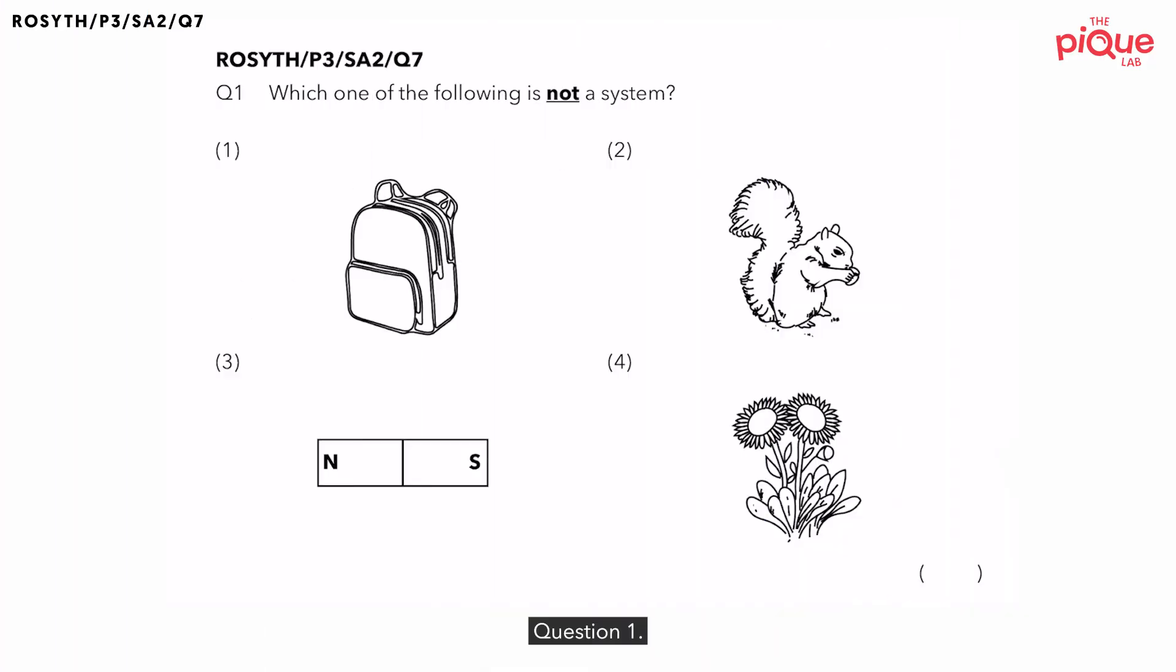Question 1. Which one of the following is not a system? Now before we answer this question, we have to understand what does the word system mean. What is considered as a system? When we say something is a system, it means that something has to be made up of more than one part.